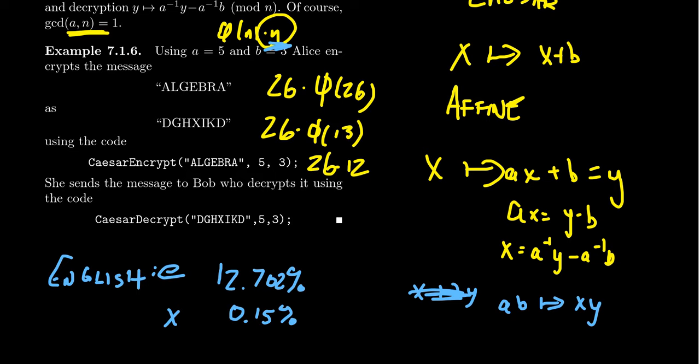Now, admittedly, these are not without vulnerabilities to frequency attacks as well. Because, for example, the pair TH is much more frequent in the English language versus the pair QX. I don't know if that ever appears. And so, again, there's some frequency issues that can come into play here.